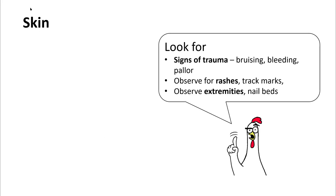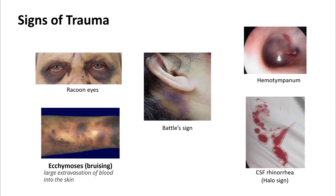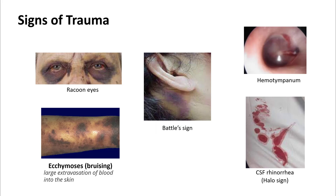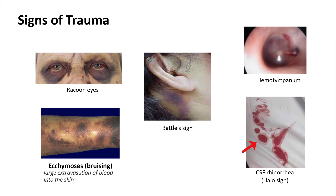Don't forget to examine the skin thoroughly. Look for signs of trauma, observe for rashes and track marks, and observe extremities especially the nail beds. Signs of trauma include bruising around the eyes, which is raccoon eyes, and bruising around the mastoid, which is Battle's sign. Examine the tympanic membrane — you may find hemotympanum. Also look for ecchymosis and signs of CSF rhinorrhea; a halo sign would suggest a CSF leak.